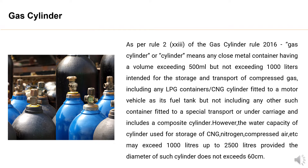However, the water capacity of a cylinder used for storage of CNG, nitrogen, compressed air, etc., may exceed 1000 liters up to 2500 liters, provided the diameter of such cylinder does not exceed 60 centimeters.